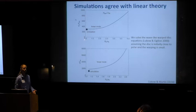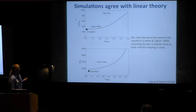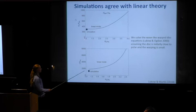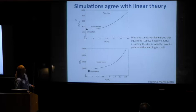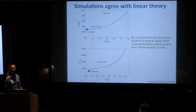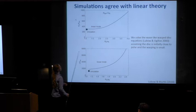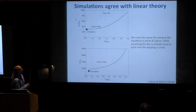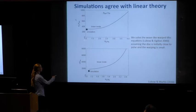We also solved the wave-like warped disk equations from Lubow and Ogilvie 2000, assuming the disk is initially close to polar and the amount of warping is small. We ran another simulation beginning at 80 degrees to compare to this theory. The top plot shows the period of the precession as a function of the inner truncation radius of the disk, and the simulation agrees very well with the linear theory. The bottom plot shows the damping rate — the rate at which it moves towards polar alignment.